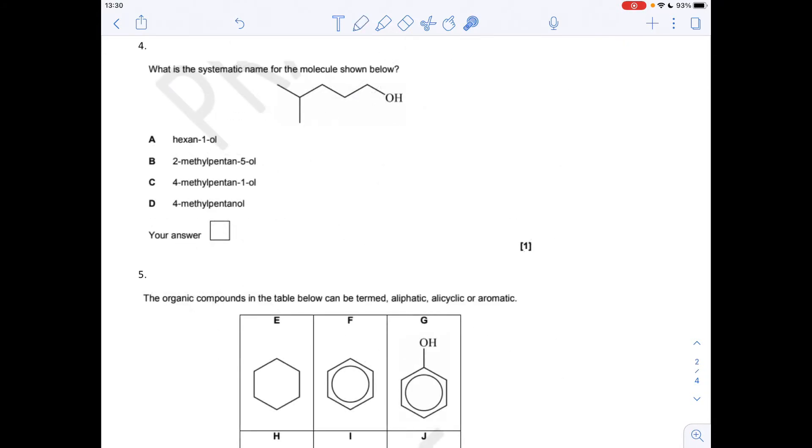Systematic name for the molecule, so we've got the longest continuous chain is 1, 2, 3, 4, 5. You could have gone that way as well. So it's 5, so it's based on pent. The OH group dictates that that's carbon number 1, so it's a pentan-1-ol. So you can see the answer's going to be C.